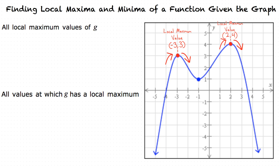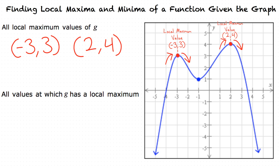Using these points, we will first find the local maximum values of function g. Looking at our local maximum points, there are two y-values. A graph can have multiple minimum or maximum values. In this case, we look at the y-values of our local maximum points. Our y-values are 3 and 4, which means that the local maximum values of function g are 3 and 4.